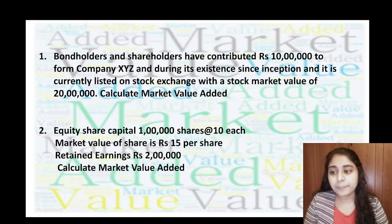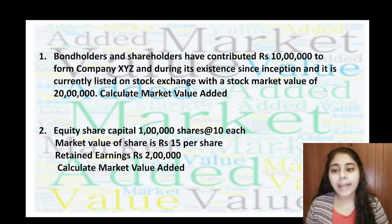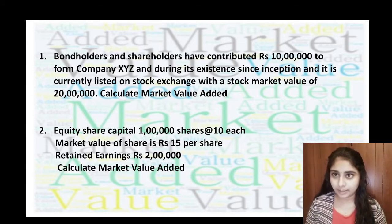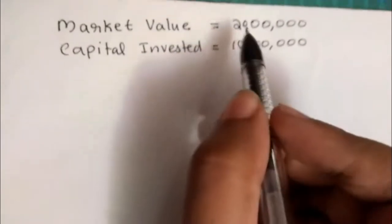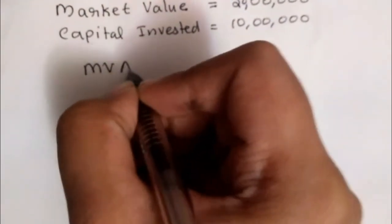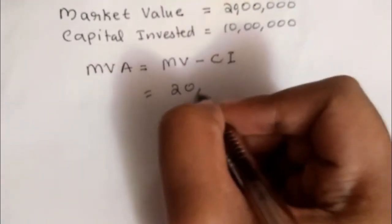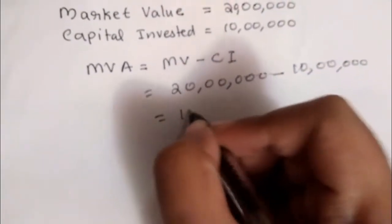First problem: Bondholders and shareholders have contributed ₹10 lakh to company XYZ since inception, and it is currently listed on the stock exchange with a market value of ₹20 lakh. Calculate the Market Value Added. The market value is ₹20 lakh and capital invested is ₹10 lakh. MVA equals market value minus capital invested, which is 20 lakhs minus 10 lakhs, giving us ₹10 lakh as the Market Value Added.